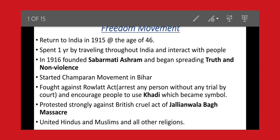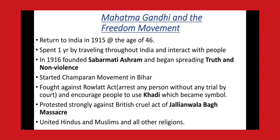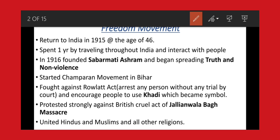Now let us start Part 2 with the entry of Bapu, Mahatma Gandhi, in the freedom movement of our country. Mahatma Gandhi, popularly known as Bapu, returned to India in 1915 after studying law in London and working as a lawyer in South Africa. After returning, he spent almost one year traveling throughout India, interacting with different people, trying to find out their problems and feelings. In 1916, he founded Sabarmati Ashram, through which he spread the ideology of truth and non-violence in our society.